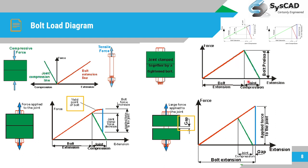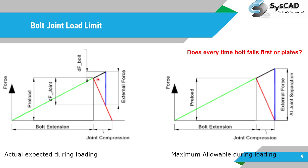In the ideal bolt joint diagram, the joint is in compression and bolts are in tension. From this diagram you can predict whether a gap is being created, whether the plates are separating, whether the bolt is yielding, and what the maximum allowable load is. The actual expected loading should be within the maximum allowable load, which is the force at which the joint starts separating.